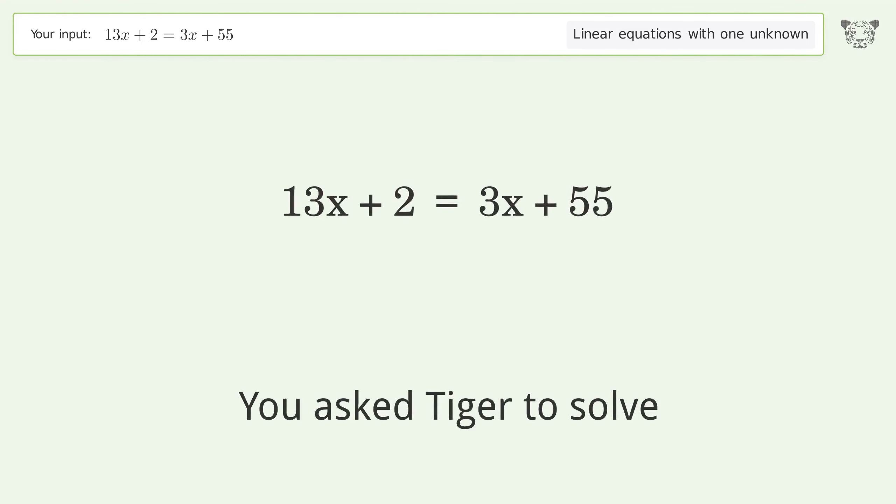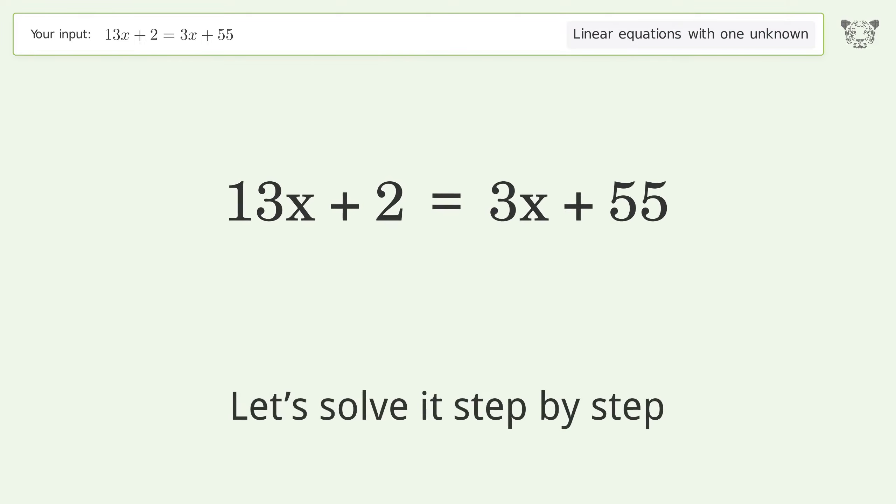You asked Tiger to solve. This deals with linear equations with one unknown. The final result is x equals 53 over 10. Let's solve it step by step.